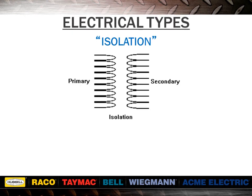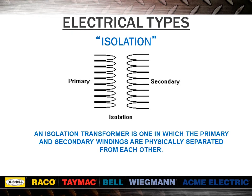Transformers have different electrical types associated with them. An isolation transformer is one in which the primary and secondary windings are physically separated from each other, sometimes referred to as insulated. In an isolation transformer, the output winding will be isolated or floating from earth ground unless bonded at time of installation.